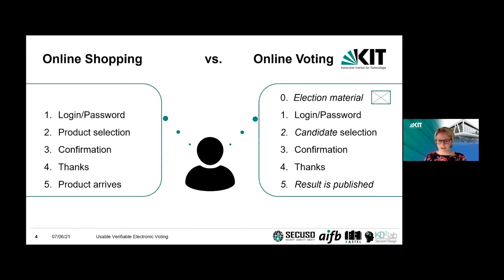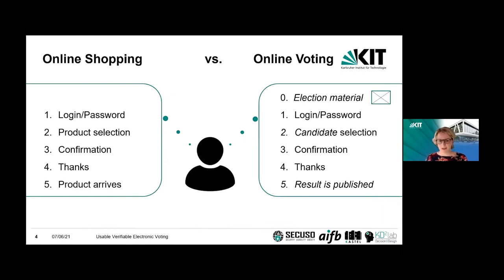An online voting system should be similar, right? You haven't voted online, so you don't have a username — that's why you may receive your voting credentials by postal service. But then you would do the same: log in with your username and password, select not a product but the candidate, confirm what you've selected, the system thanks you for your vote, and at the end it publishes the result. It would be quite easy.